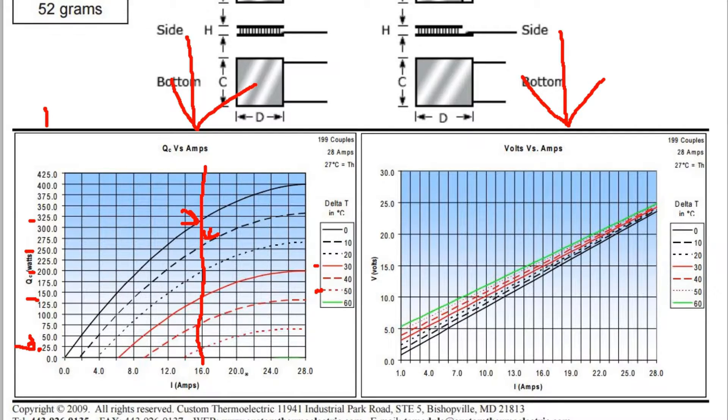So obviously you can add more power or less power along here, and this will move this line either way and change how much you can move. So if we went to 24 amps, which is this line here, to a delta of zero, we can move, I don't know what that's going to be, 390 watts. And we could move at 30 degrees, we could now move almost 190 watts.